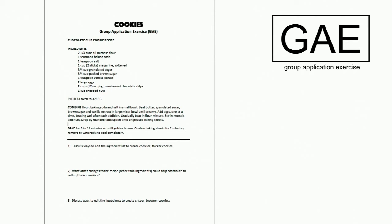As an instructor, I'm going to call on my teams to answer the questions. Team one, can you read the first question and answer it? Team one responded: they'd add more brown sugar and potentially use margarine instead of butter. Perfect - so you're changing the ratio of brown to white sugar, increasing brown sugar, potentially using less flour, and changing butter to margarine.